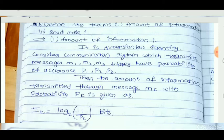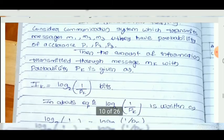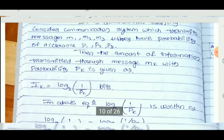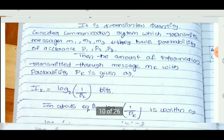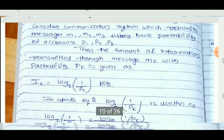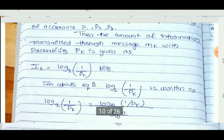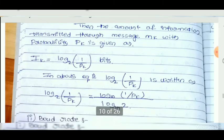Messages M1, M2, M3 have the probability of occurrence P1, P2, P3 respectively. The amount of information transmitted through the message Mk with probability Pk is given as Ik equal to log base 2 of (1 divided by Pk) bits.